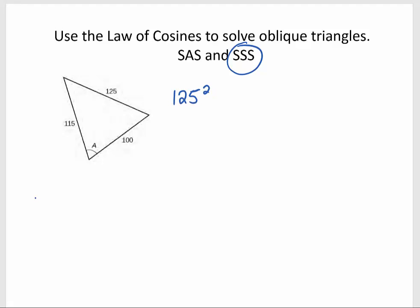Actually, maybe I'll start by reminding us what the law of cosines looks like. So it's one of the sides squared equals the sum of the squares of the other two sides minus two times the product of those two sides times the cosine of the angle between those two sides.